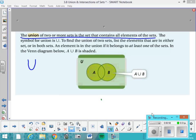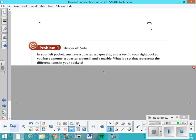Let's do a practice problem. In your left pocket, you have a quarter, a paper clip, and a key. In your right pocket, you have a penny, a quarter, a pencil, and a marble. What is the set that represents the different items in your pockets? So right now I'd like you to write down in rostered form the set of all things in your left pocket and the set of all things in your right pocket.